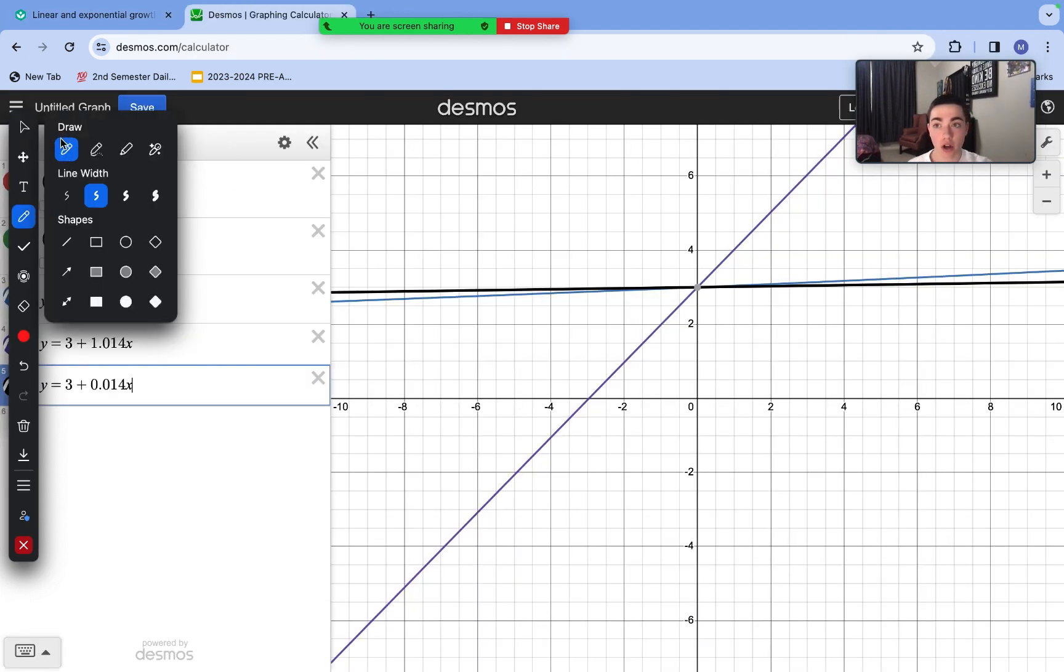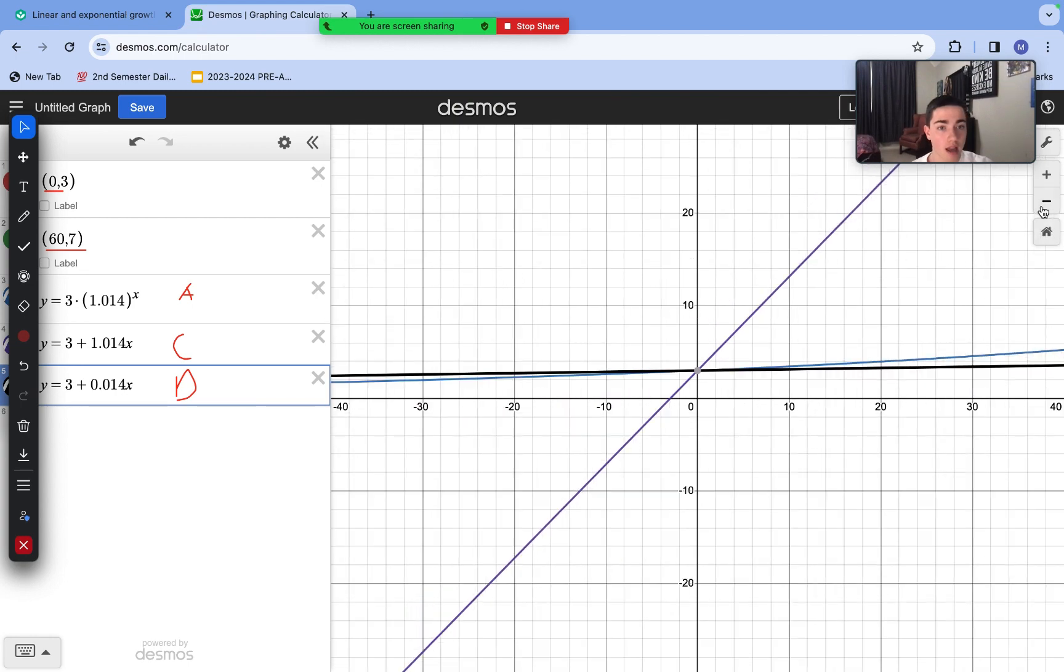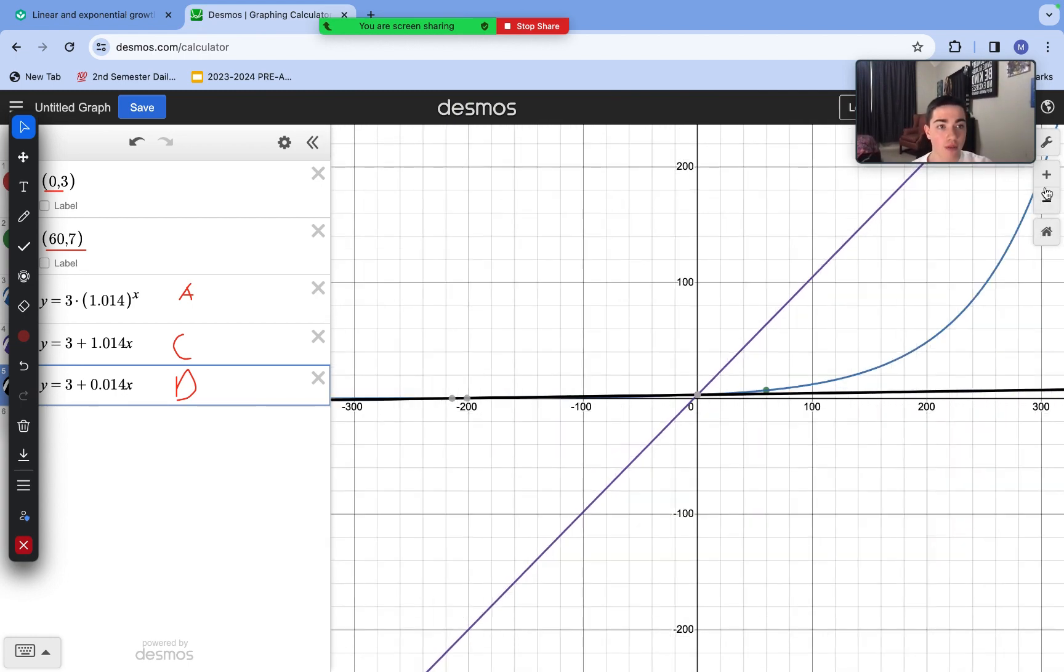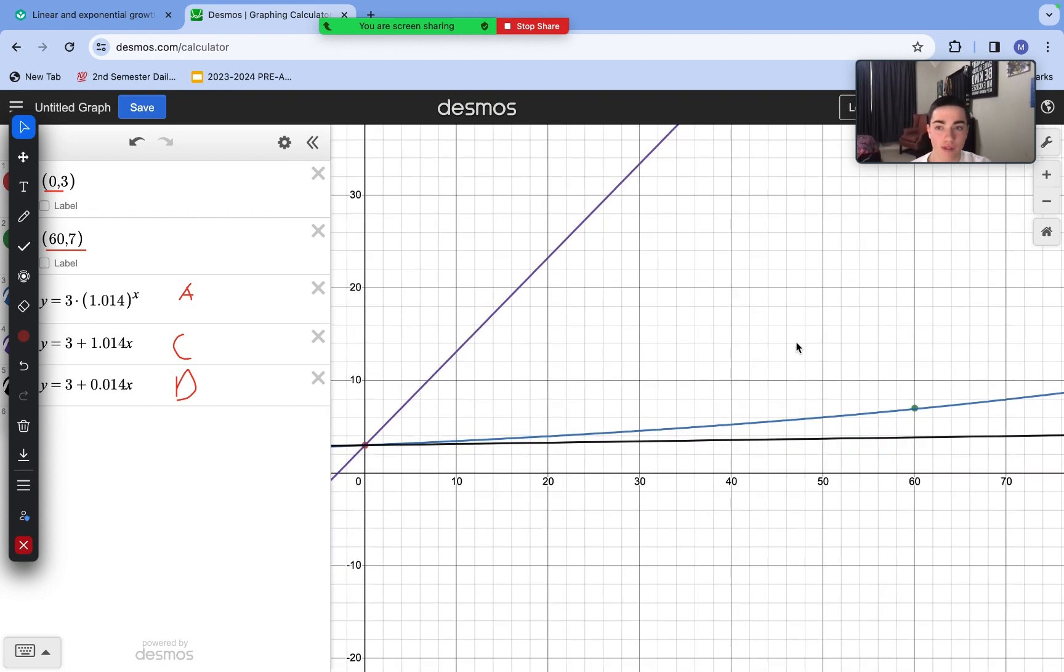Here we have each of our functions. We have function A here, function C here, and function D here, along with our two coordinate pairs that we established need to be part of our plots. Going ahead and zooming out on this graph, we can see that our second coordinate point only gets crossed with one other function. Our other two linear functions, in fact, never seem to go near our 60, 7 point that was mentioned in the word problem context.